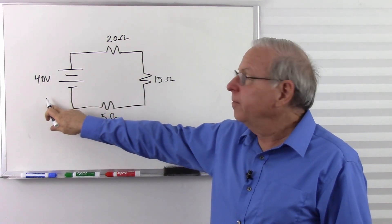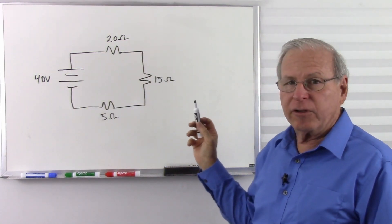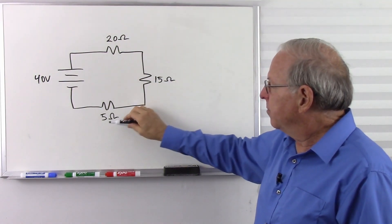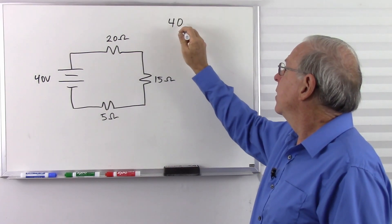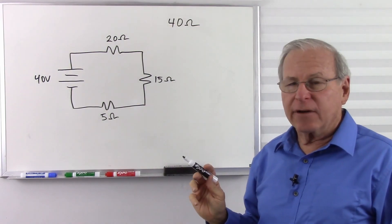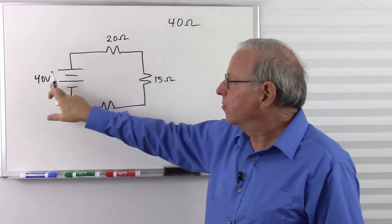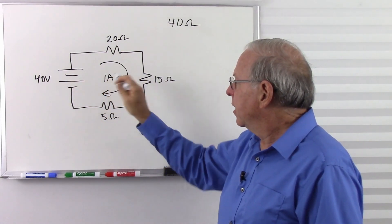So if I have 40 volts, and how much total resistance do I have? Well, in a series circuit, you simply add the resistors up. So I have 20 plus 15 plus 5. That equals 40 ohms. So how much current do I have? Well, if you know your voltage, you divide into it. 40 goes into 40, gives us 1 amp of current.